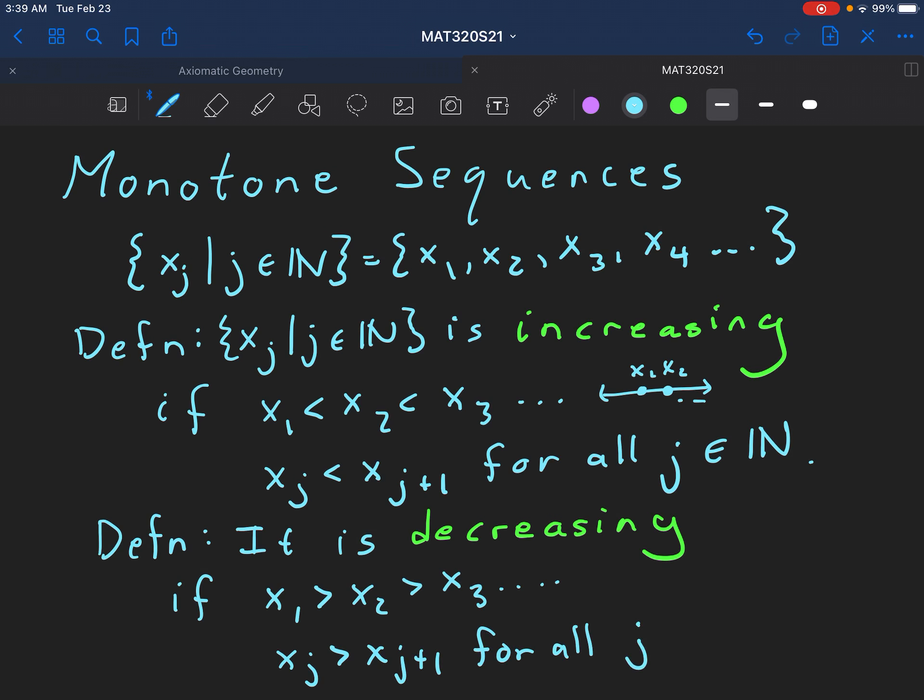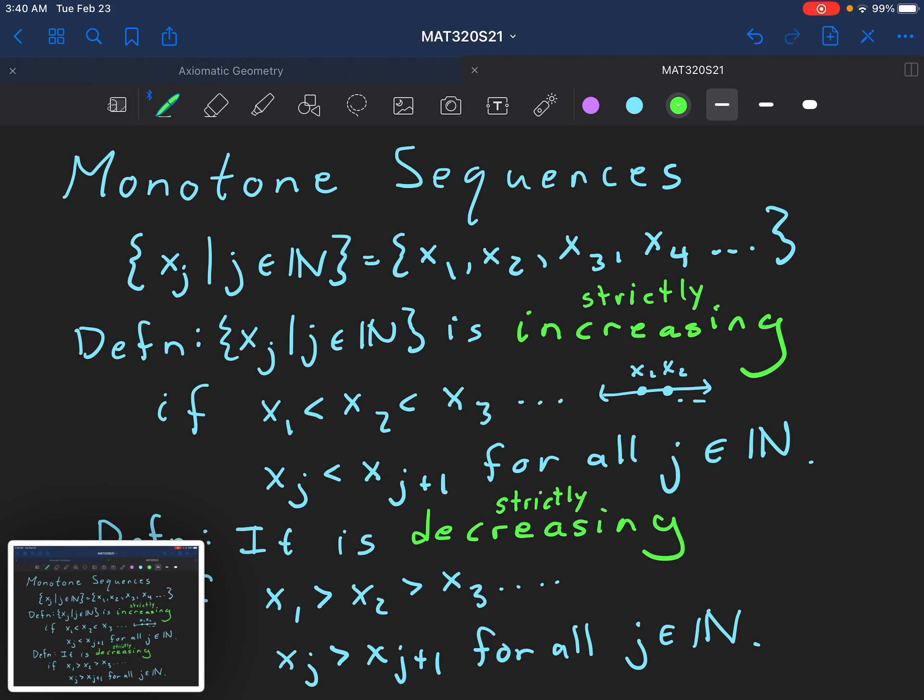Now some people call this strictly increasing and some people call this increasing. And some people call this strictly decreasing and some people call this decreasing. So if you're ever not completely clear you can just say strictly increasing and everyone will know exactly what you mean. So why do we need to talk about strictly increasing versus other kinds of increasing? Well, another version would be...